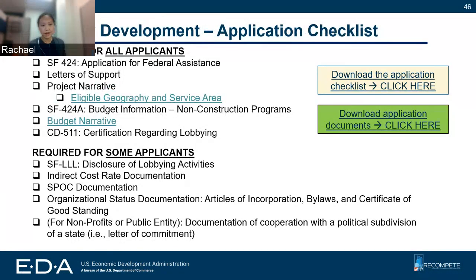For your strategy development awards, there are a set of requirements for all applicants. No matter your applicant type or the types of entities involved in your application, you will need to fill out these forms: an SF-424, letters of support, project narrative, your SF-424A, your budget narrative, and your CD-511.